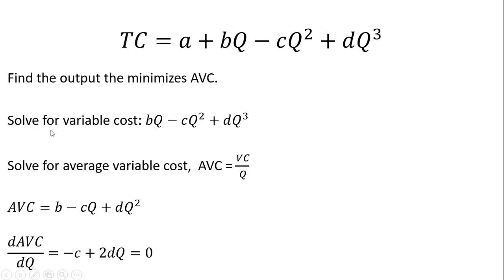The first thing we'll do is solve for variable cost. Variable cost is that part of the total cost equation that excludes fixed cost. A is the constant or the fixed cost — everything else with the Q in it is variable cost. So we get variable cost.